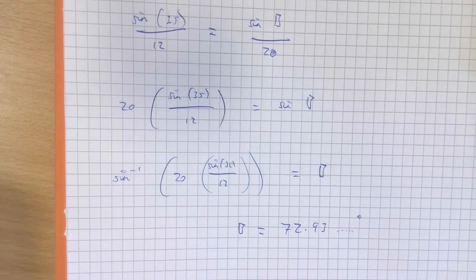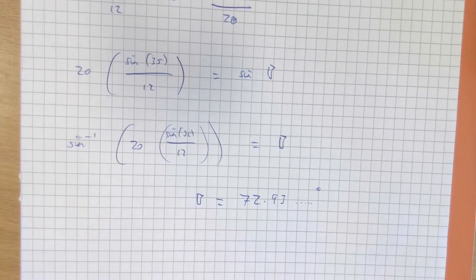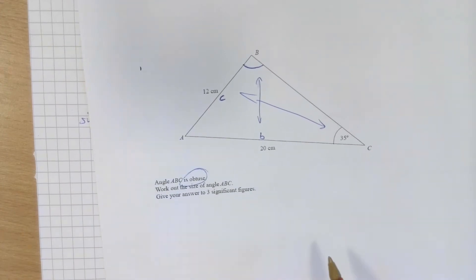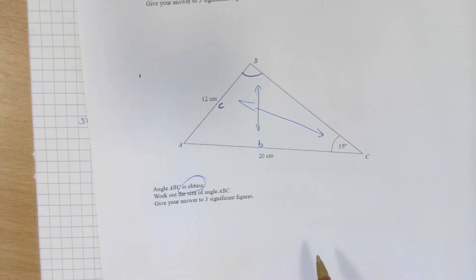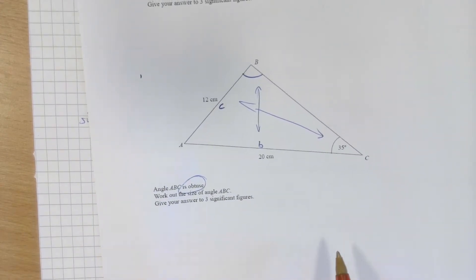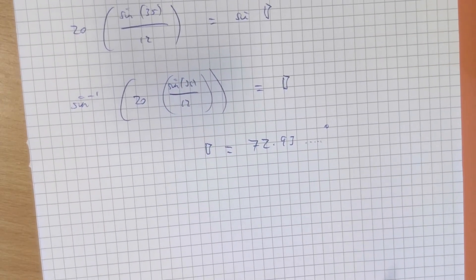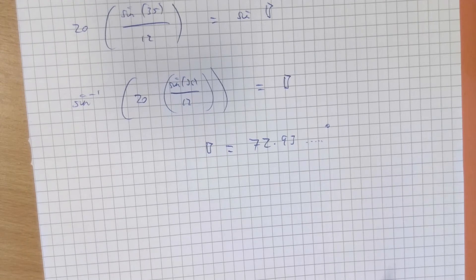Now, an issue has arisen, has it not? Because we have been told angle ABC is obtuse. Obtuse is bigger than 90 degrees. The angle that we found here is 72.93. That's less than. That's a bit awkward.